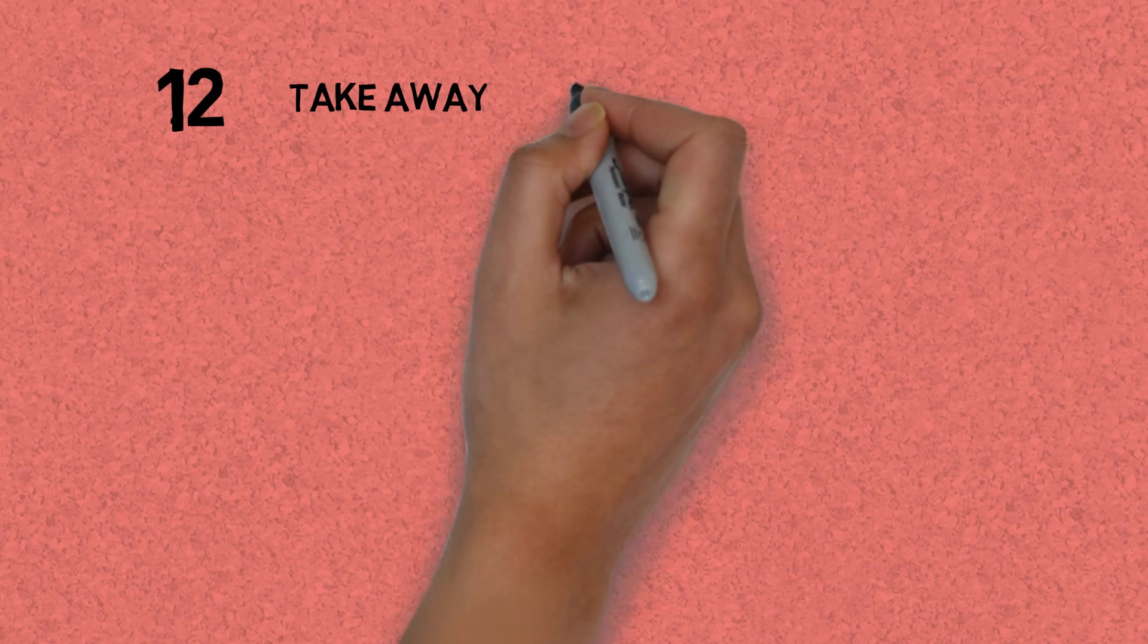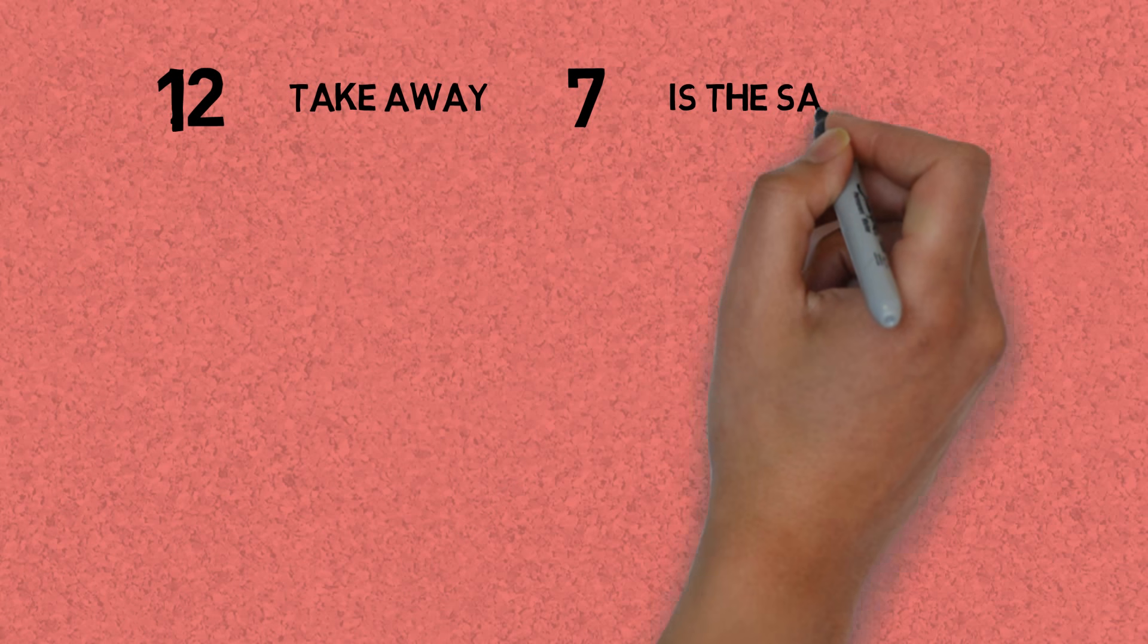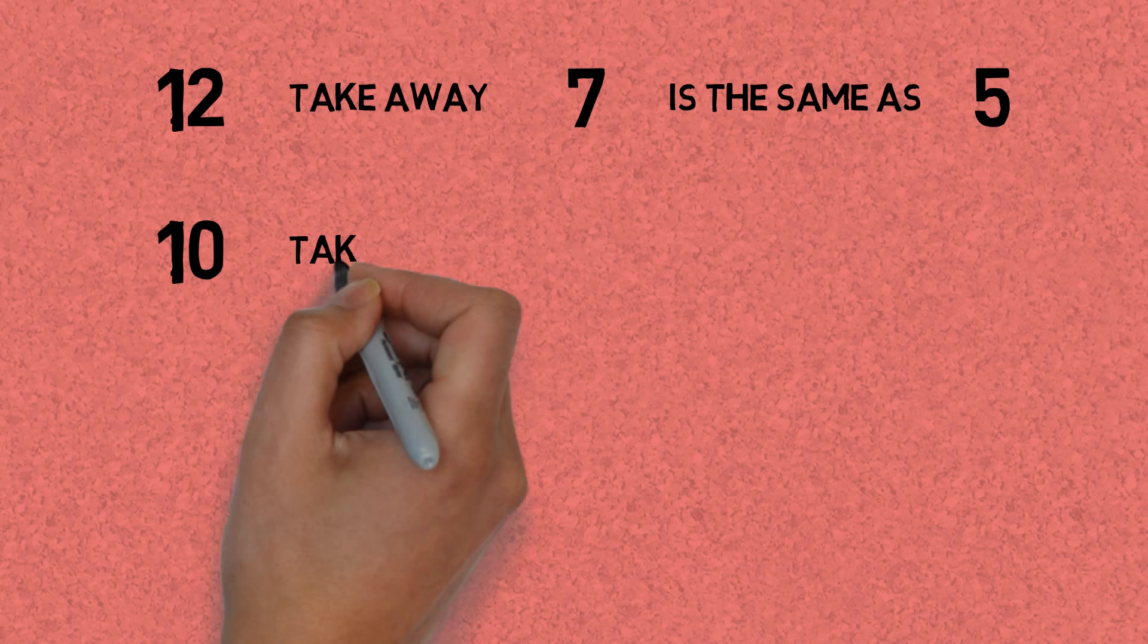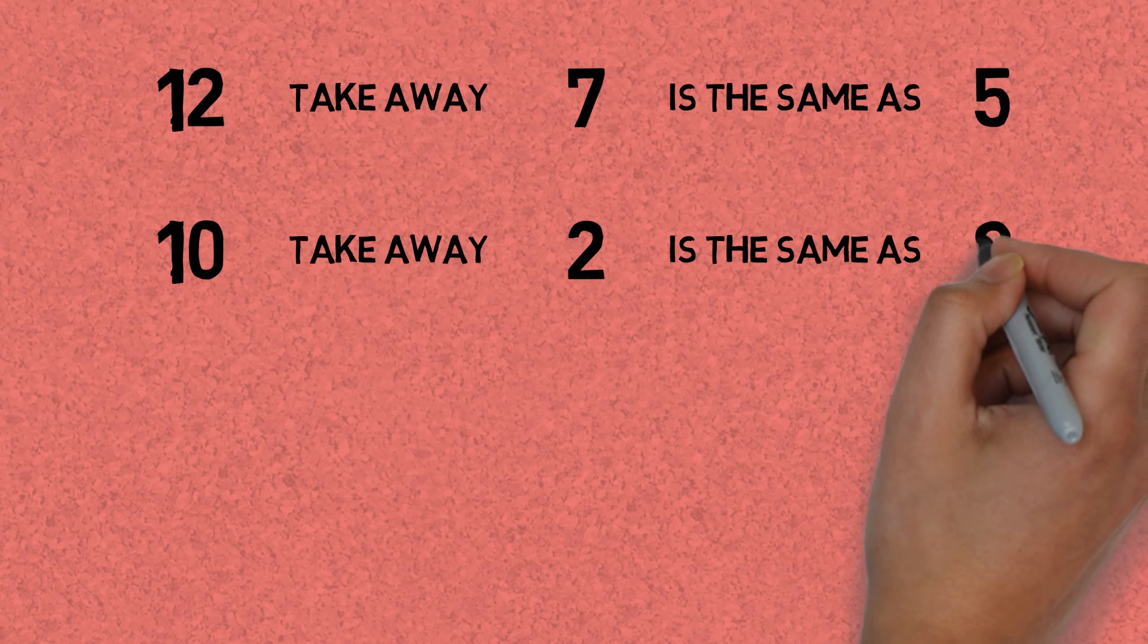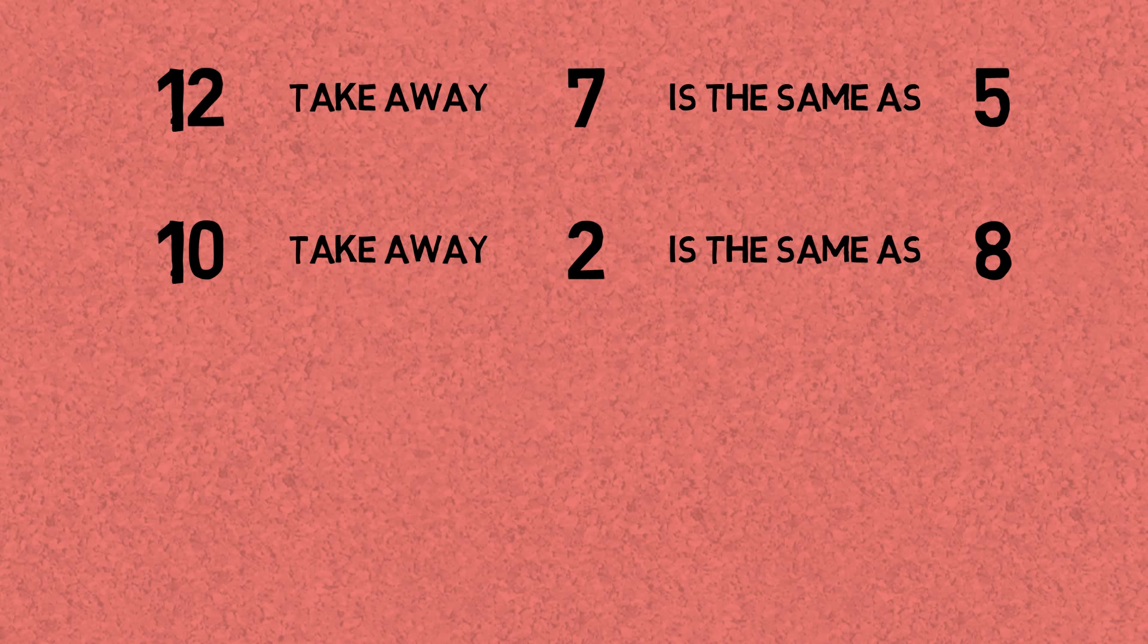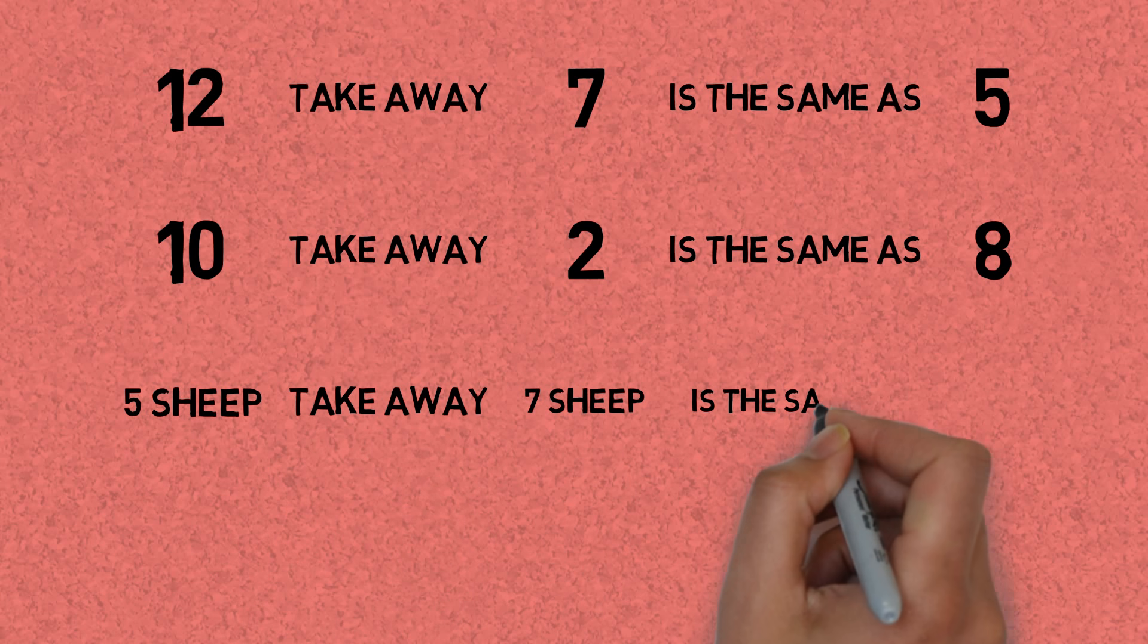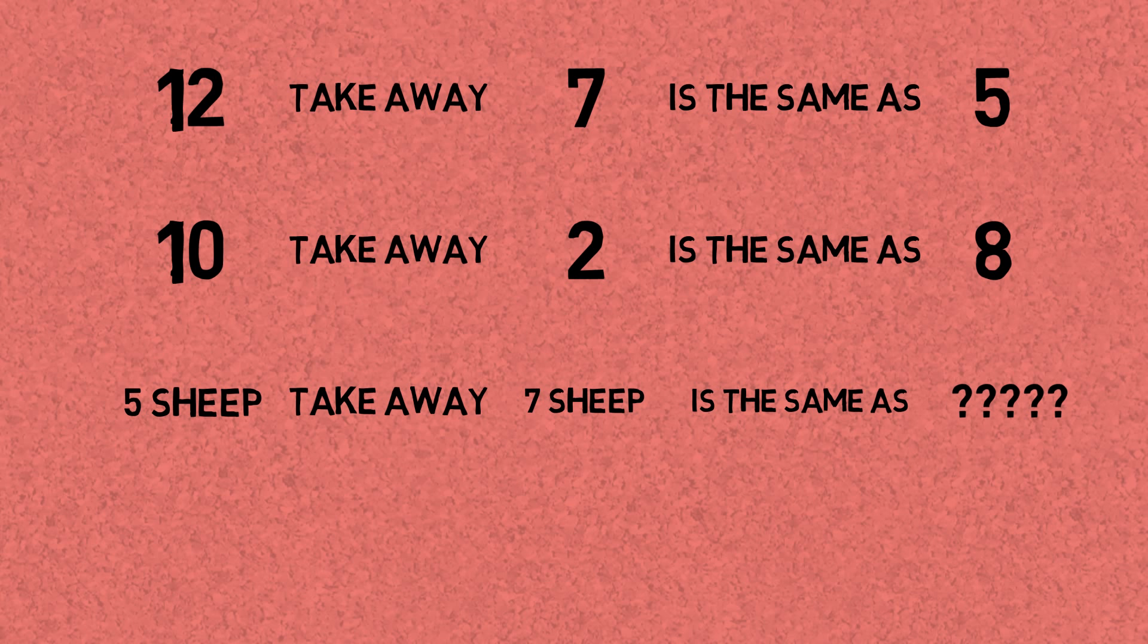Now let's try this with other numbers. Twelve take away seven is the same as five. Ten take away two is the same as eight. And the final example is five sheep take away seven sheep. Well, let's leave that for later.